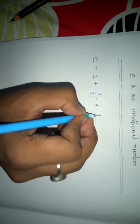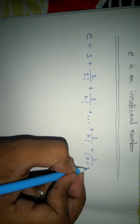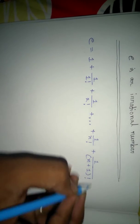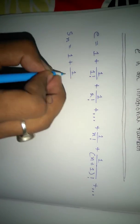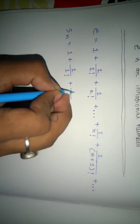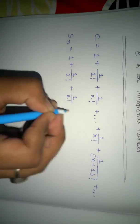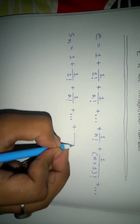We know that e can be expressed as e = 1 + 1/1! + 1/2! + ... + 1/n! + 1/(n+1)! + ... And we take Sn = 1 + 1/1! + 1/2! + ... + 1/n!.